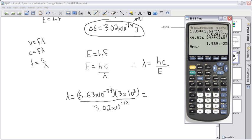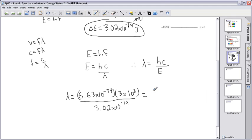I do that carefully. So I can start with 6.63 times 10 to the minus 34, multiply that by 3 times 10 to the 8, and that I want to divide by 3.02 times 10 to the minus 19 joules. And I get 6.59 times 10 to the minus 7 meters. If I wanted to though, I can also convert that to nanometers and get 659 nanometers. That's the same thing.